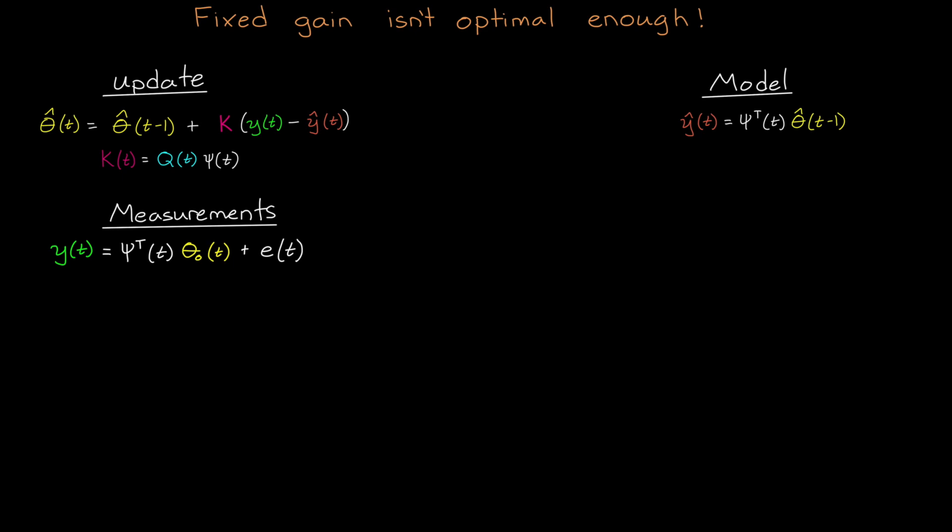Consider the measurements y generated by the actual system, which we're assuming is linear, plus some measurement noise assumed to be Gaussian white noise. In this way, we can't trust the measurements 100% because the real output of the system is corrupted with some measurement noise.